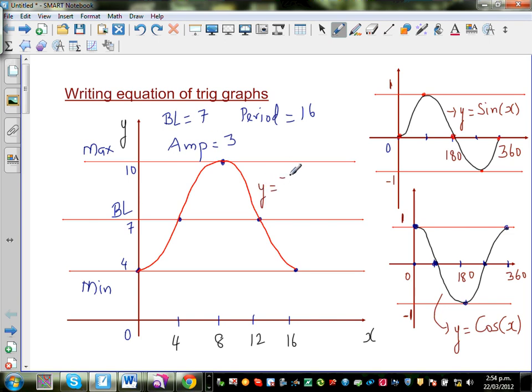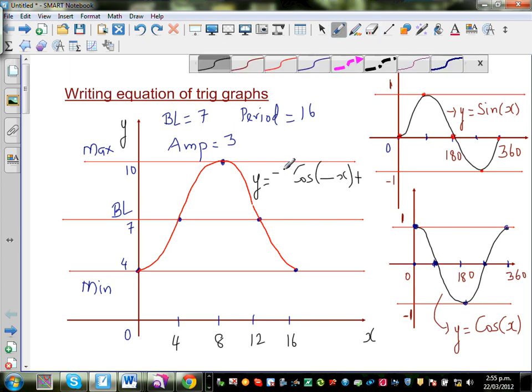So I can say y is equal to, as it's a negative cos graph, will be negative cos. I'll put something x. So let me write this as closely as possible. It's very easy if you know how to write a trig graph or equation of it. Y is equal to minus, your amplitude. What's your amplitude? Amplitude is not 7, amplitude is 3. So it's negative 3 cos something x plus 7.